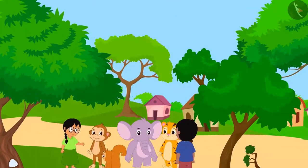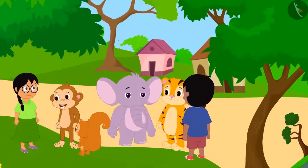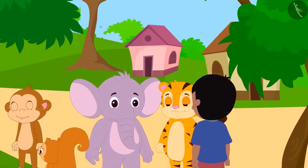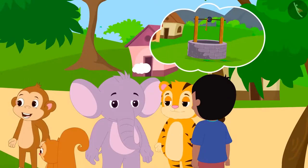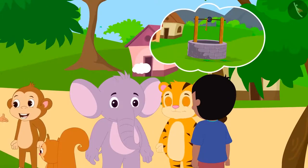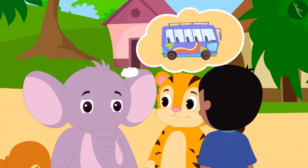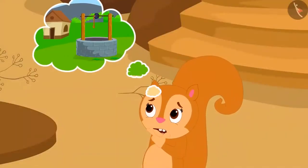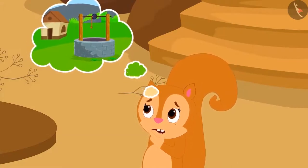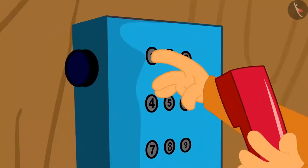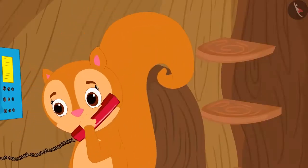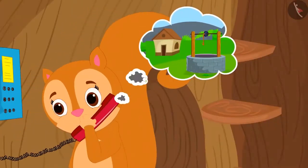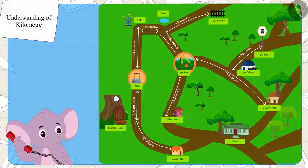Everyone from the village is going on a trip. It was decided that in the morning they would gather near the village well and board a bus together from there. But Chanda did not know the way to the well from her house, so she immediately called Appu and asked him the way. Appu asked her to look at the trip map they were given.